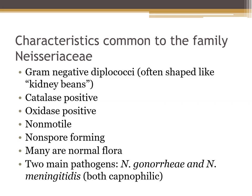There are many characteristics that are common to the family Neisseriaceae. This is the first group of organisms we've talked about that are actually gram-negative — specifically gram-negative diplococci. They are in pairs, which is why we call them diplococci, and they're kidney bean shaped.